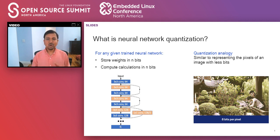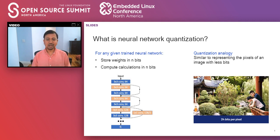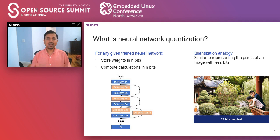Not only do the parameters get quantized, but the compute gets quantized as well. If the input comes in at 8-bit integers with 8-bit parameters feeding into a convolutional layer, the output accumulates back up to perhaps 32 bits. What you do is convert those 32-bit integers back into 8-bit by finding a scale factor for every layer. You keep that scale factor and remember it for that layer.